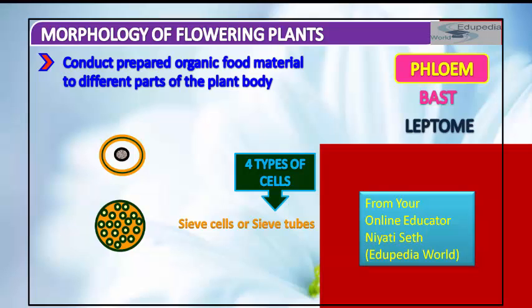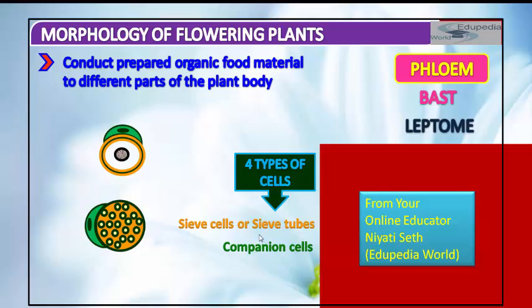Sieve cells are very simple and they are found in less advanced vascular plants such as seedless vascular plants and gymnosperms. These cells connect together to create a network that allows for the transport of food. This is your sieve cell or sieve tube, and next to it is your companion cell.